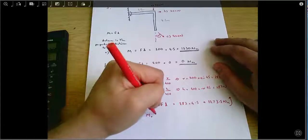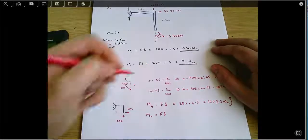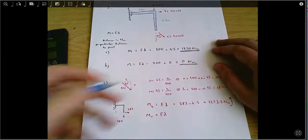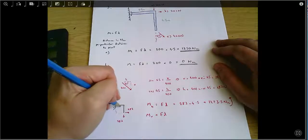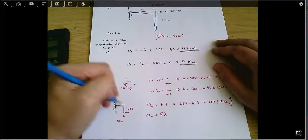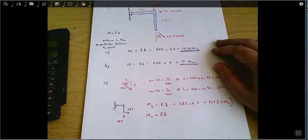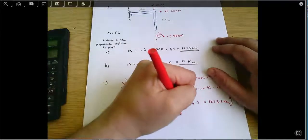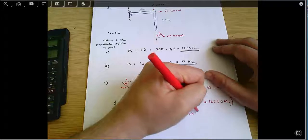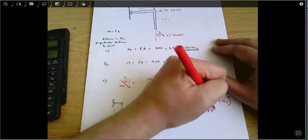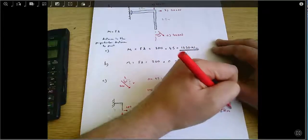The moment due to the vertical force equals force times distance. And again, the perpendicular distance back is that distance there, which is also 4.5. So this is 283 times 4.5, which equals 1273.5 Newton meters clockwise.